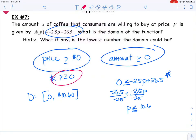So we have P has to be greater than or equal to zero, but it has to be less than or equal to 10.6. Remember P means price. So it looks like the lowest my domain, my P, is $0. The highest it's going to be, or else people are going to stop buying my coffee, is $10.60. So my domain is $0 to $10.60.